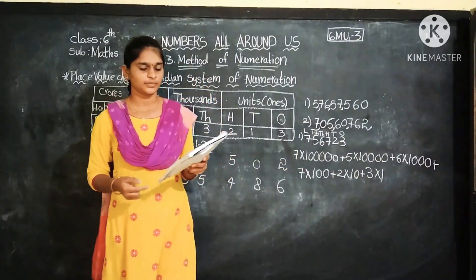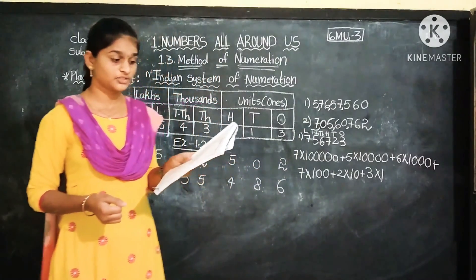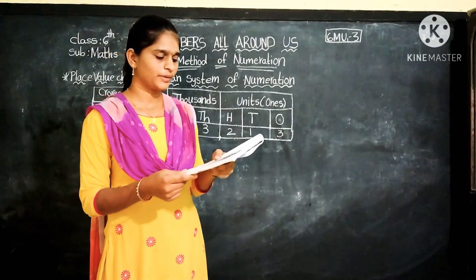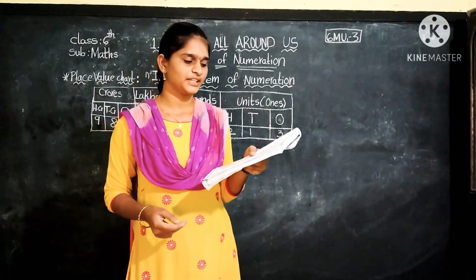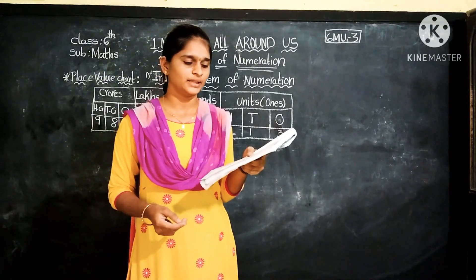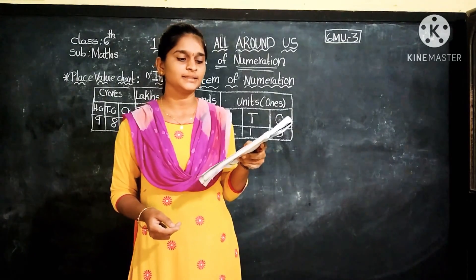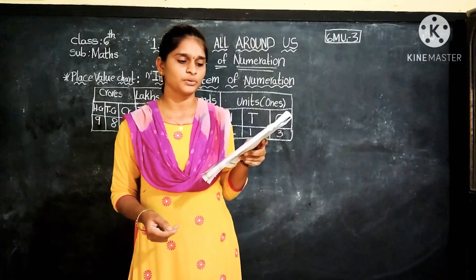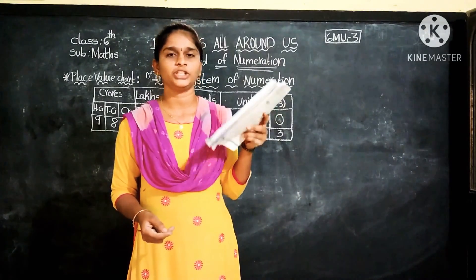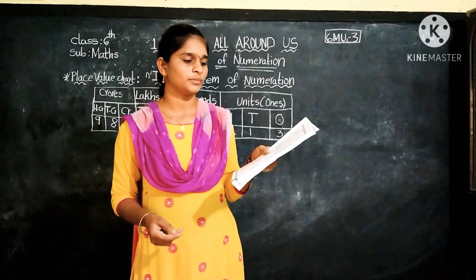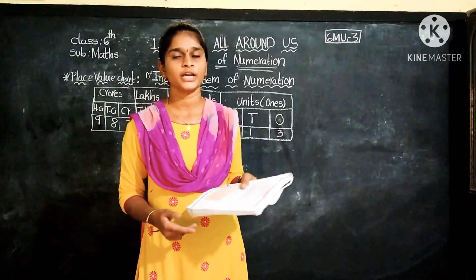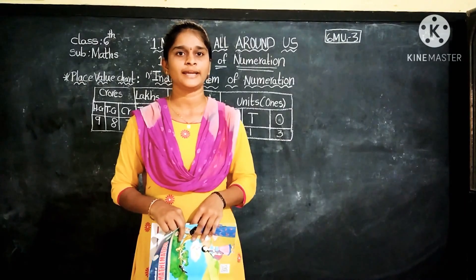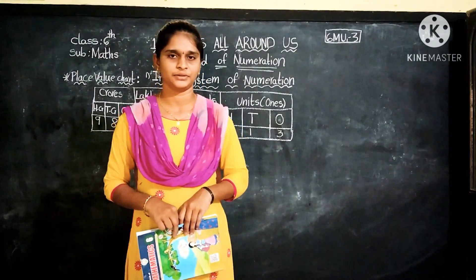The remaining numbers are the same process. Next, the fourth problem: determine the difference between the place value and face value of 6 in 68 Crores 64 Lakhs 56 Thousand 7 hundred 92. Children, try this problem at home. We will meet in the next class. Thank you for watching.